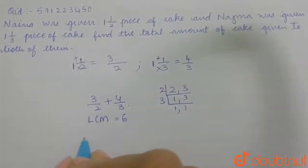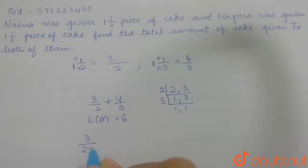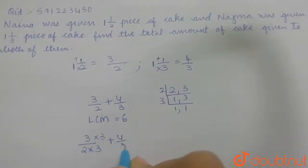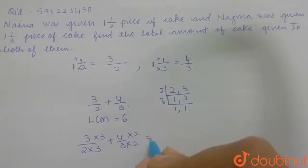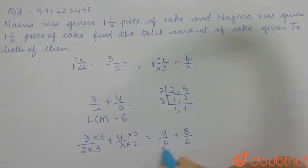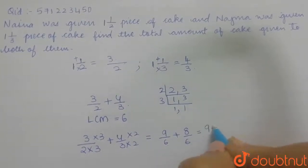Plus 4/3 times 2 times 2. This will give you 3 times 3 is 9/6 plus 4 times 2 is 8/6. Since the denominator is the same, we can add: 9 plus 8 by 6.